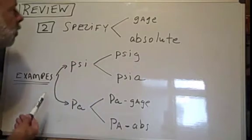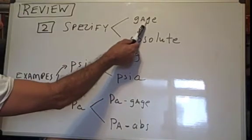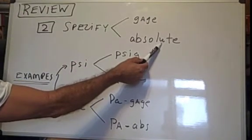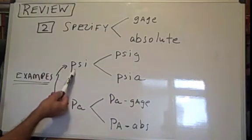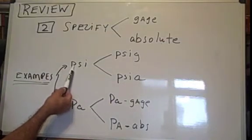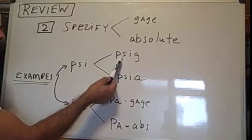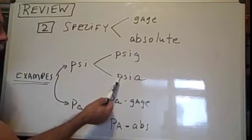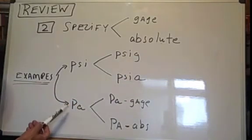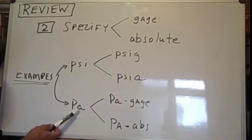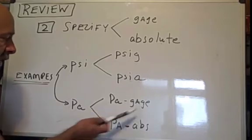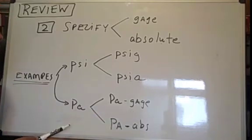When we specify pressure, we want to specify either gauge pressure or absolute pressure. For example, in traditional units, we can say PSI, but we really want to say PSIG for gauge or PSIA for absolute. In the SI system, instead of saying Pascals, we want to say Pascals of gauge pressure or Pascals of absolute pressure.